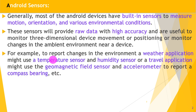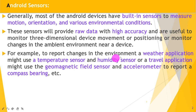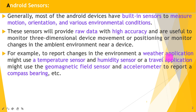To report changes in the environment, a weather application might use a temperature sensor and humidity sensor. A travel application might use a geomagnetic field sensor and accelerometer to report a compass bearing. So weather application uses temperature and humidity sensors, while travel application uses accelerometer and geomagnetic field sensor.